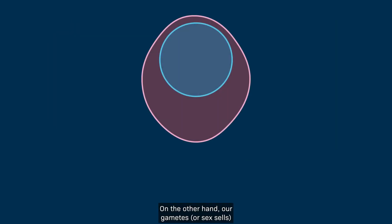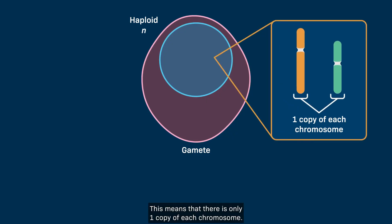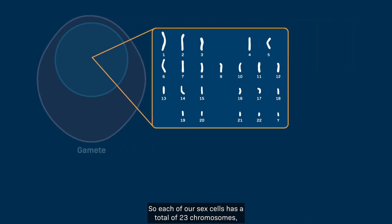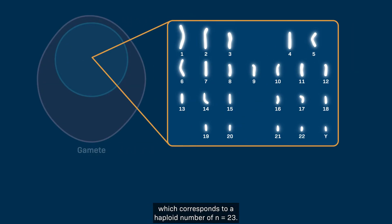On the other hand, our gametes, or sex cells, are haploid, which is designated as N. This means that there is only one copy of each chromosome. So each of our sex cells has a total of 23 chromosomes, which corresponds to a haploid number of N equals 23.